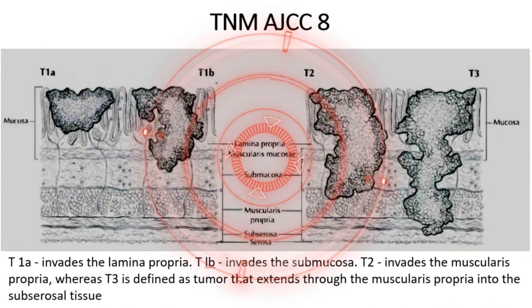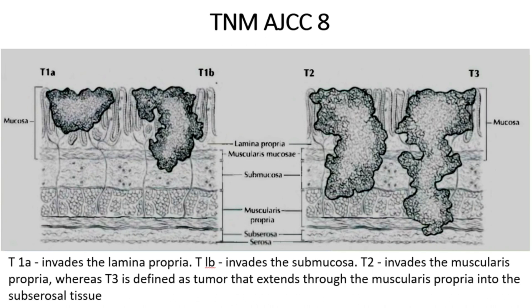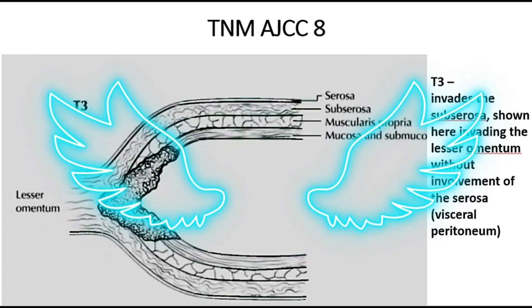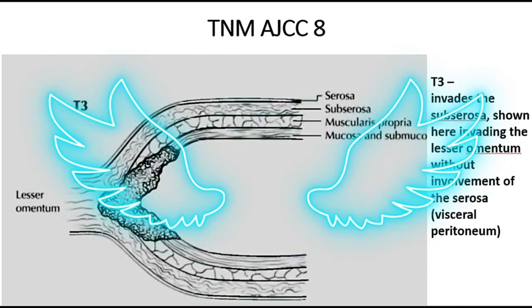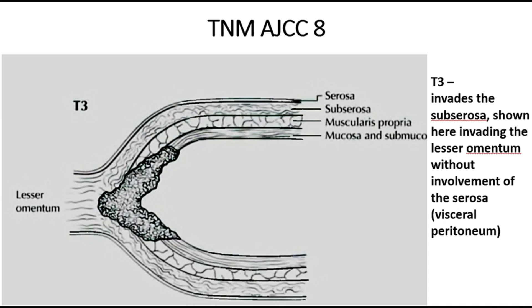We have highlighted the different layers: lamina propria, muscularis mucosae, submucosa, muscularis propria, subserosa, and serosa. T1B invades the submucosa, T2 invades the muscularis propria, and T3 is defined as tumor that extends through the muscularis propria into the subserosal tissue. T3 invades the subserosa but the serosa is not perforated. If the serosa, that is the visceral peritoneum, is perforated, then the tumor is T4. When T3 is invading the lesser omentum but the omental layers are intact, it is still T3 stage because there is no breach.